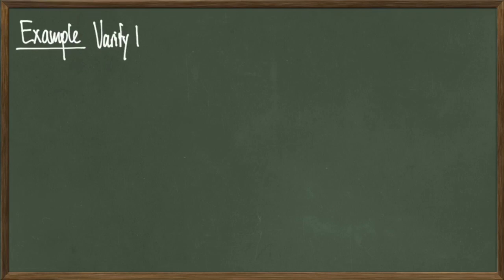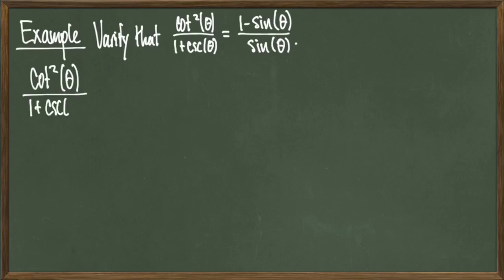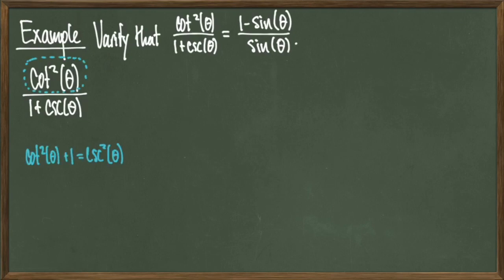In our first example, we'll verify that cotangent squared of theta divided by 1 plus secant squared of theta is equal to 1 minus sine of theta over sine. With the use of these new identities, this isn't as bad as it might appear at first. I'm going to first focus on the left-hand side: cotangent squared of theta over 1 plus secant squared of theta.